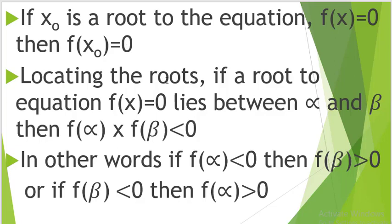Locating the roots. If a root to the equation f(x) equal to 0 lies between alpha and beta, then f(alpha) times f(beta) must be less than 0. That is, if we know that our root lies between alpha and beta, when you get the functional values of alpha and beta, the product of the two functional values must give you a value which is less than 0, that is, which is negative.